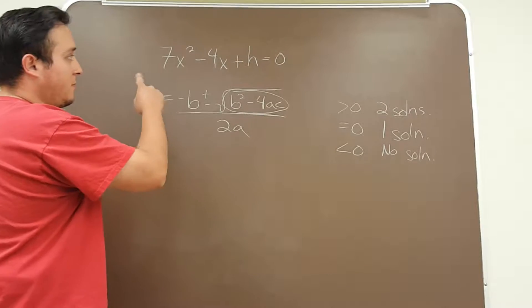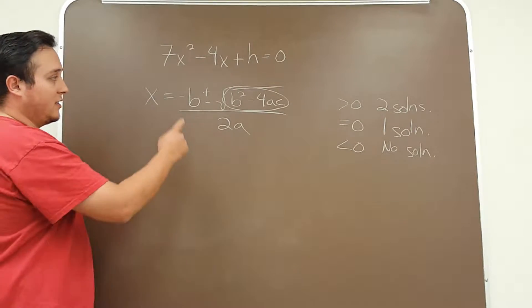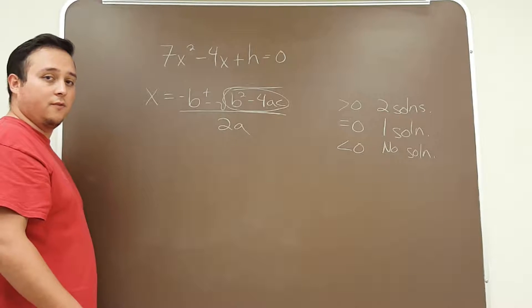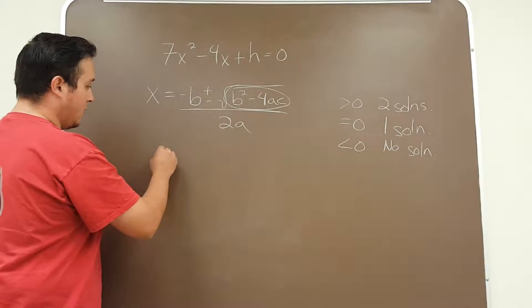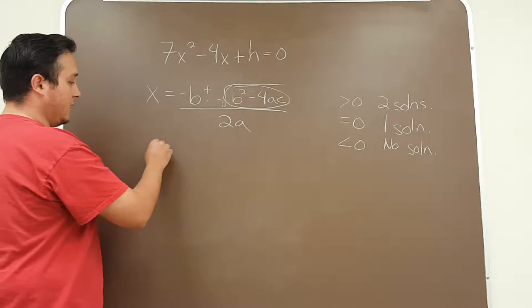So in this specific problem we're going to want to find one real solution, so we're going to set the discriminant equal to 0 and solve for h. So we have to identify first what is our a, b, and c.